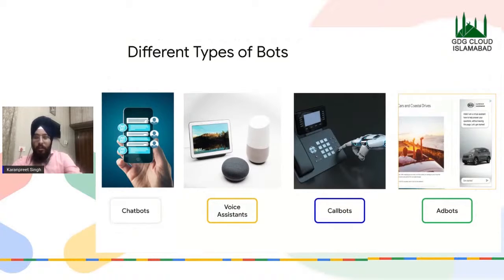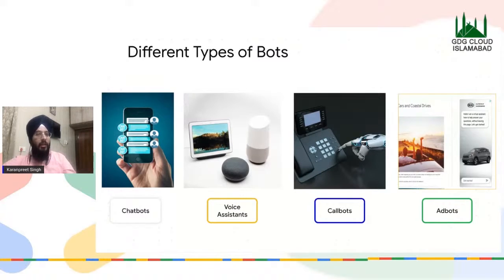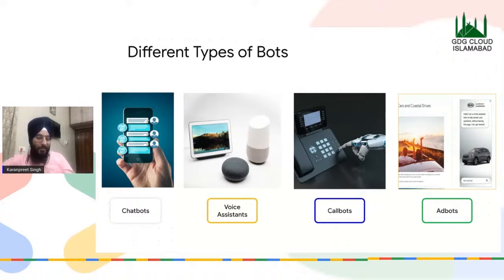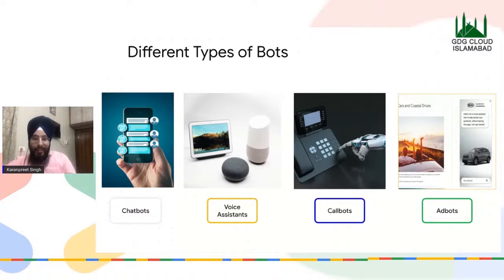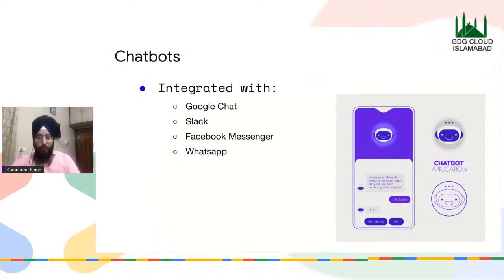The last type is ad bots. On Facebook or blog websites, within ads there's an option to type something — ask about price, mileage, etc. The bot captures that you're interested in, say, buying a car, and passes your information to a sales representative who will contact you for a demo or pitch. Let me show you a real demo of a call bot right now.